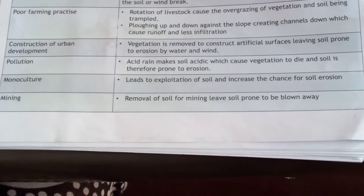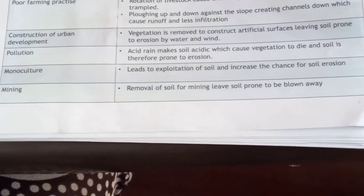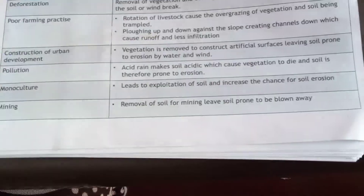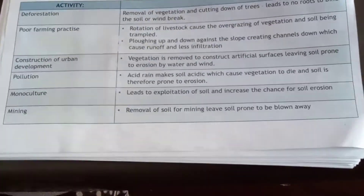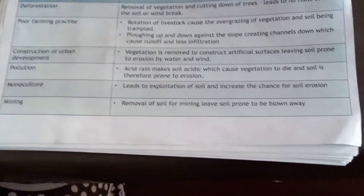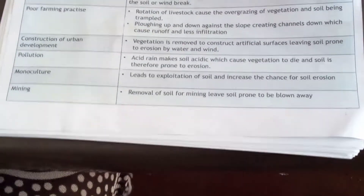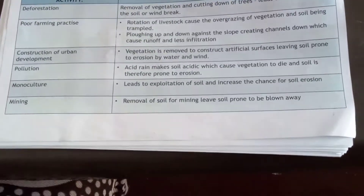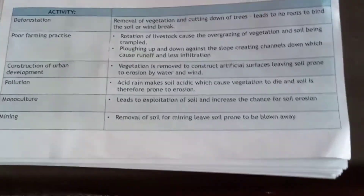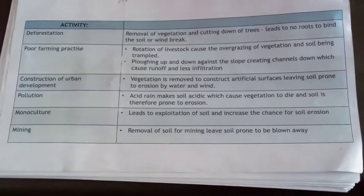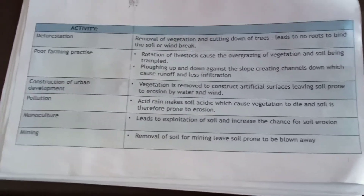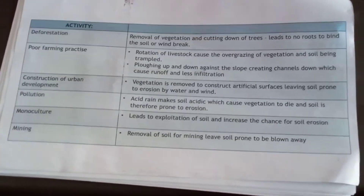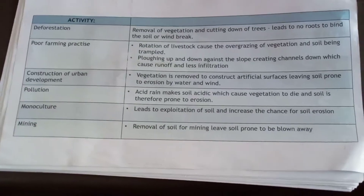Pollution can cause acid rain which makes the soil acidic and causes vegetation to die. When vegetation dies, we no longer have vegetation to bind the soil, and therefore the area becomes prone to erosion.